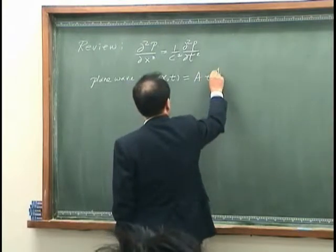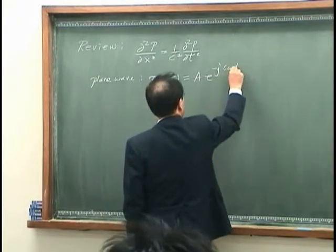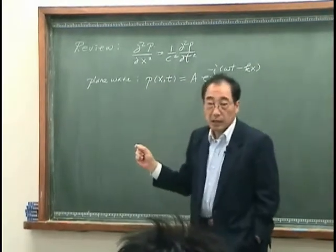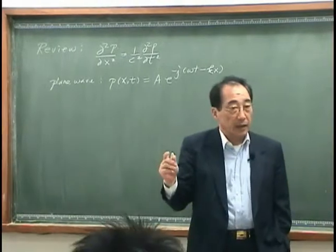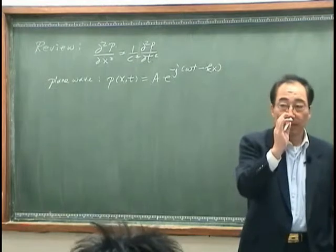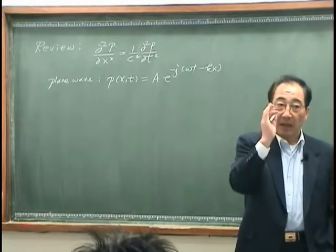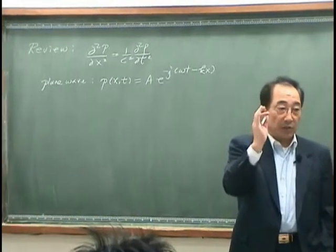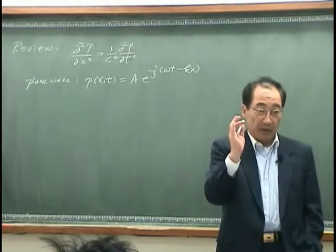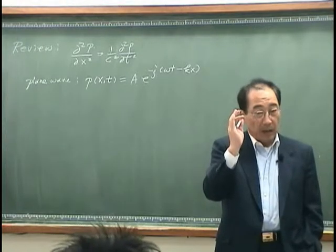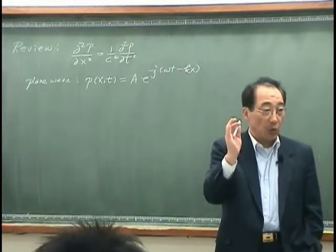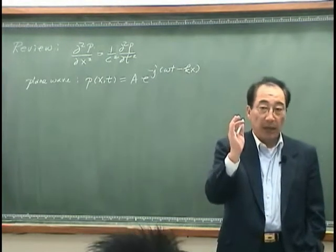For a one-dimensional case, we can write the plane wave like this. That is the wave propagating in the positive x direction. The wave front of the plane wave is planar.